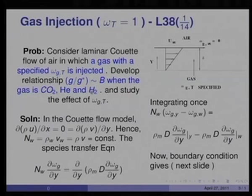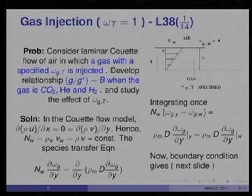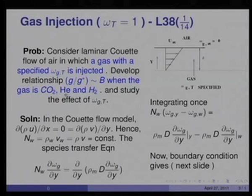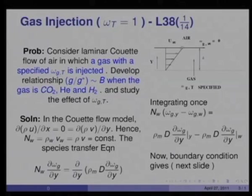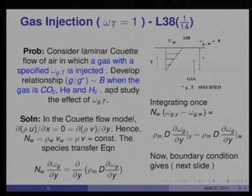These three gases were chosen because the molecular weight of CO2 is 44, the molecular weight of air is 29, helium is 4, and hydrogen is 2. We thus have gases whose molecular weights are both higher and lower than that of air, making this a good case to see how property variations affect g/g*.